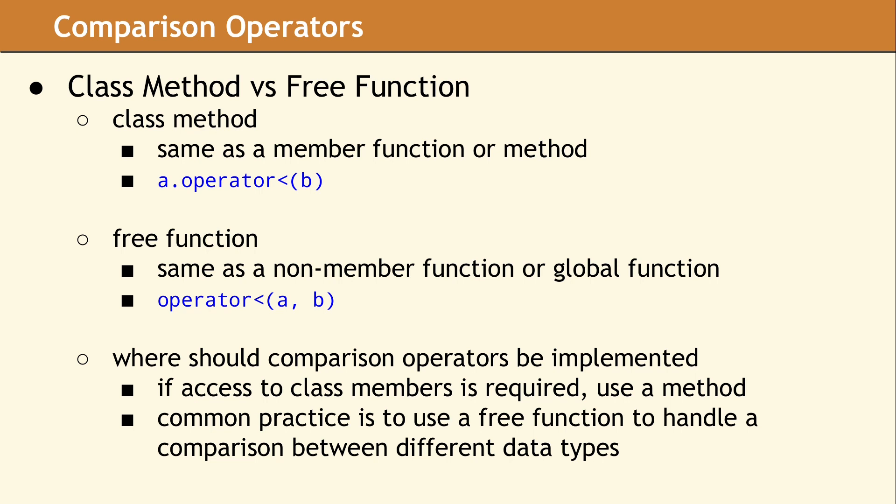Another practice is to prefer using a free function when comparing values of different data types. If the comparison operator is implemented as a class method, then it must be located in the class corresponding to the left-hand argument. If this value is a built-in type, or belongs to some third-party library, it will not be possible to add a new method to that existing class. In this case, you will need to use a free function. In general, there are more use cases that support using a free function.